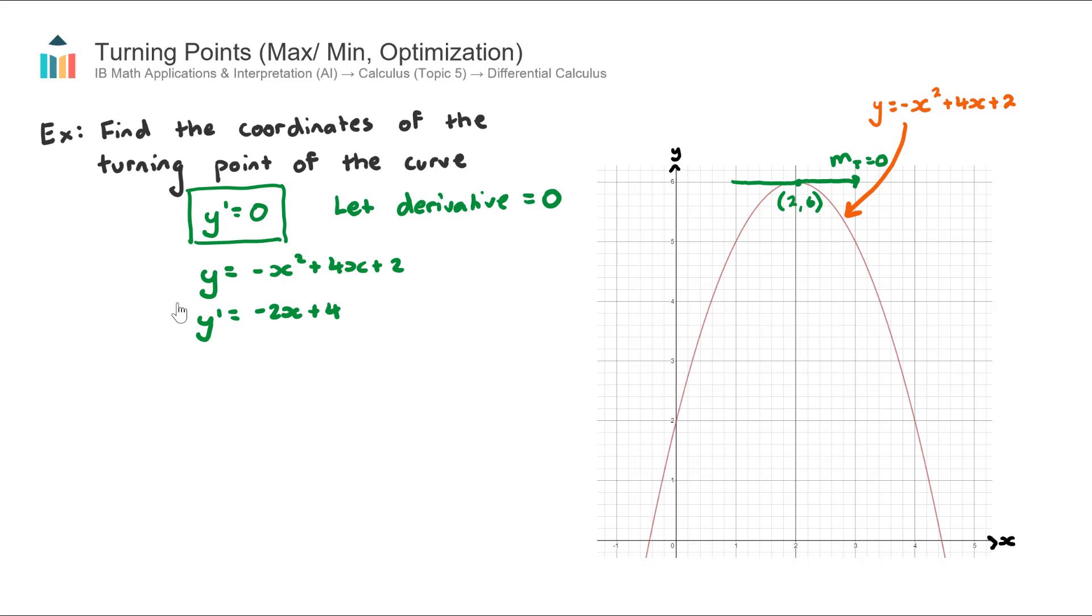Now I'm going to bring this concept back in. At the turning point the slope of the curve is equal to zero and I know that the derivative gives me the slope. So I can join these two things together. I'm actually going to let my derivative be equal to zero. So therefore 0 = -2x + 4 and I can use some algebra here to now go ahead and solve for x.